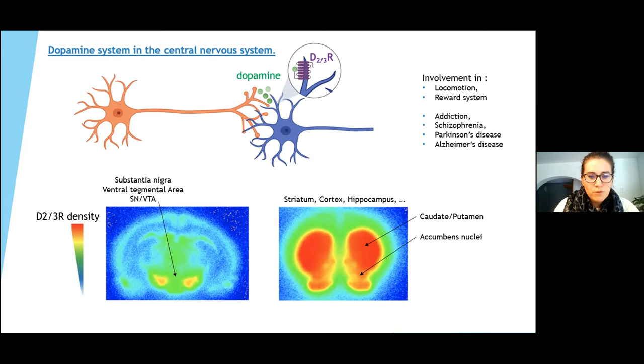Alteration in D2/3R density has been proposed in various pathologies. For example, we have shown that administration of THC, the active molecule in cannabis, induced alteration in D2/3R density. We also demonstrated that innate sensitivity to the effect of addictive drugs is in relationship with D2/3R density. Thus, it appears obvious to be able to measure this receptor density in vivo.